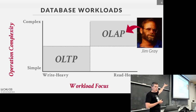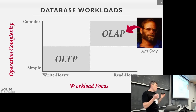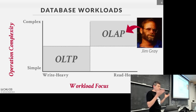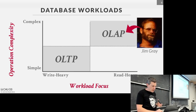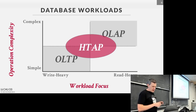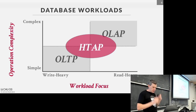Jim Gray won the Turing Award in databases — I think in '96 — and is a very famous researcher. In 2006, he was out sailing by himself, and his boat disappeared. It was actually one of the early examples of crowdsourcing because they moved satellites to take pictures of the San Francisco Bay and people looked at images trying to find the boat, but they never found him.